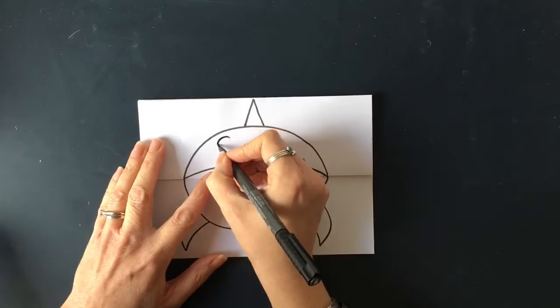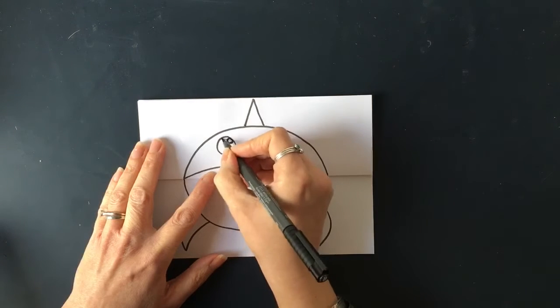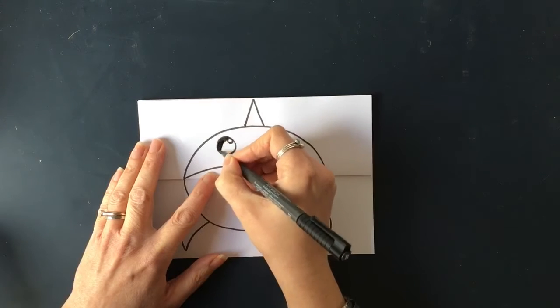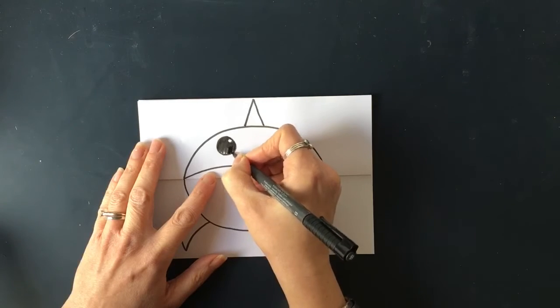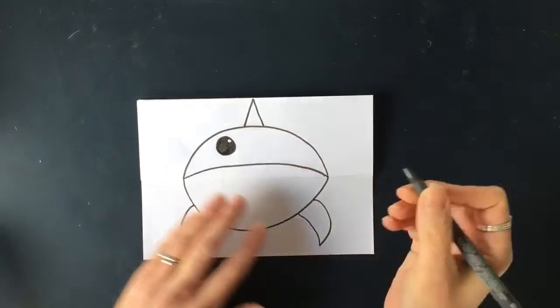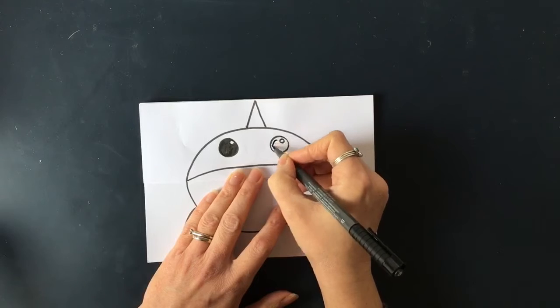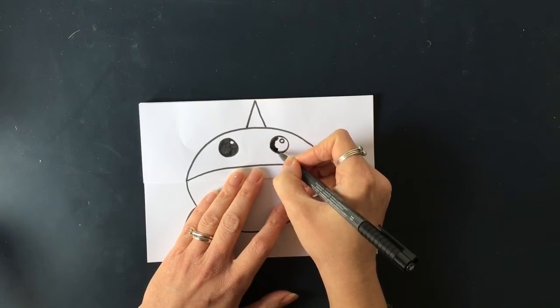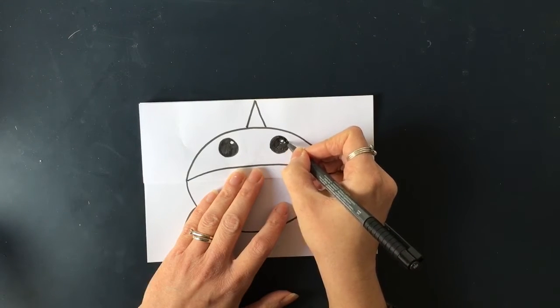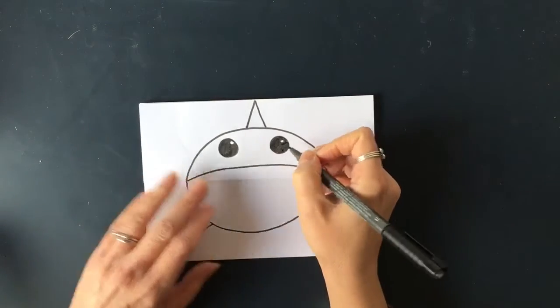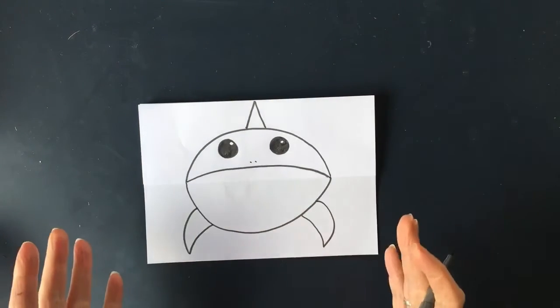And then I'm going to put some eyes in. So do a circle, and then another circle like this in the top corner. Then I'm going to color in all of it apart from the white circle. This will act like a bit of a highlight. There we go, there's one. Let's do my other eye. Put the little circle in the top and then color it in. Right, and then two little dots here. One, two. That's the outside of your shark drawn.